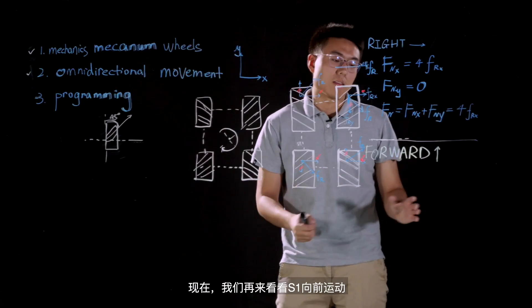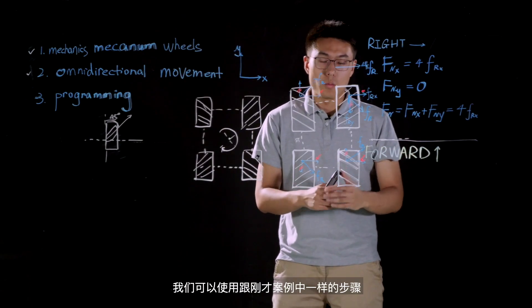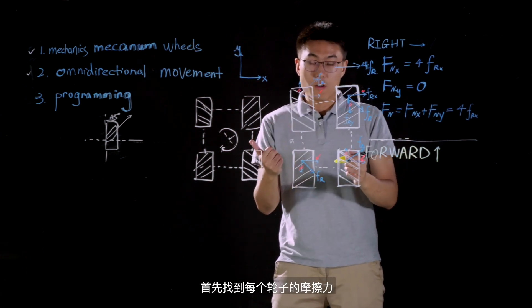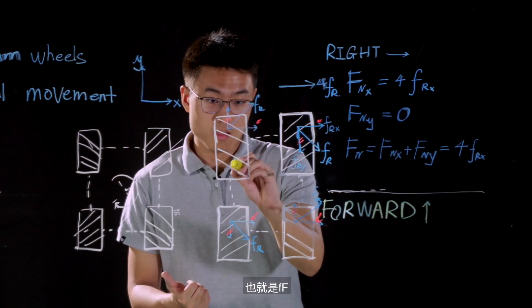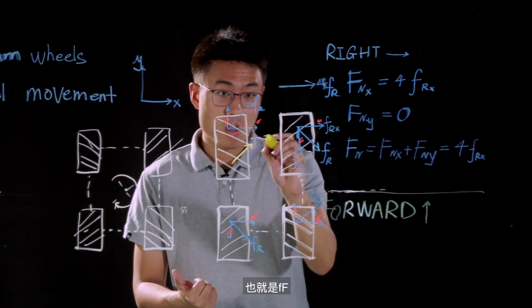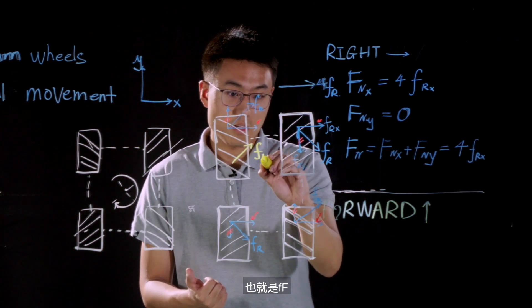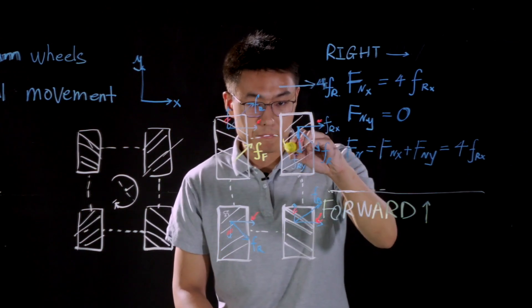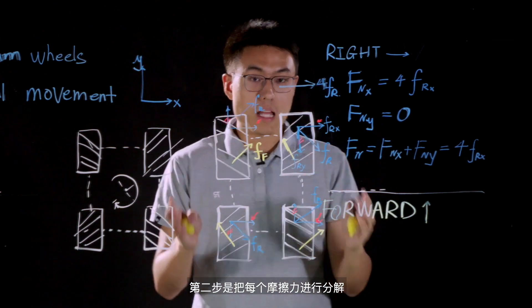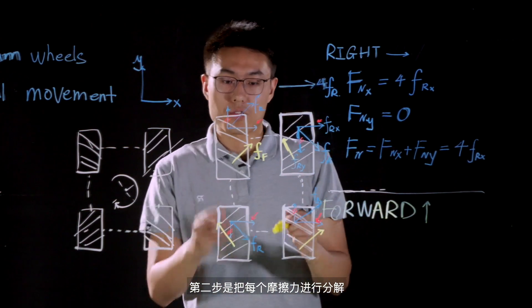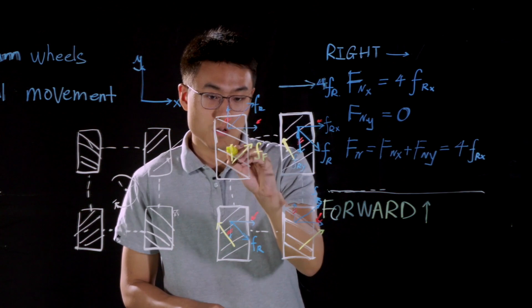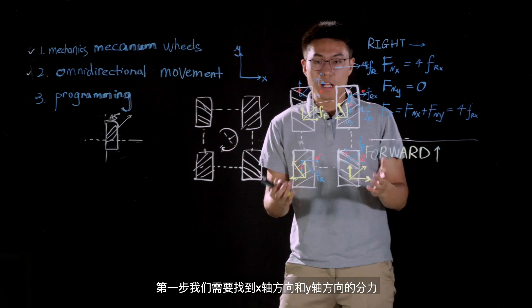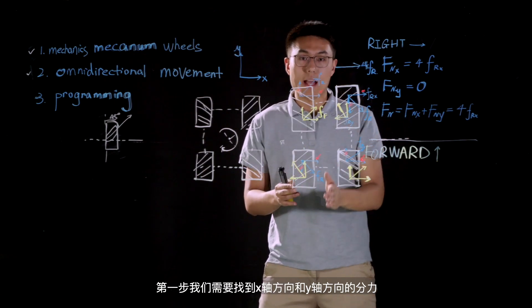Now, let's take a look at the case that S1 is moving forward. We can actually use the same procedure as we did in the previous case. The first step is to find the friction force on each wheel. The second step is to find the component forces on each friction force.